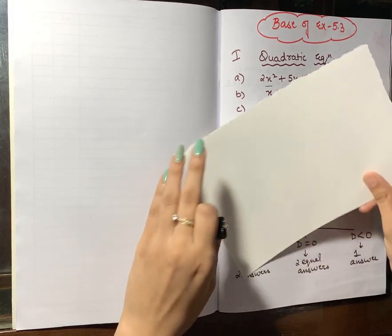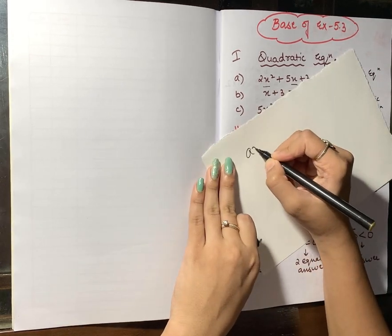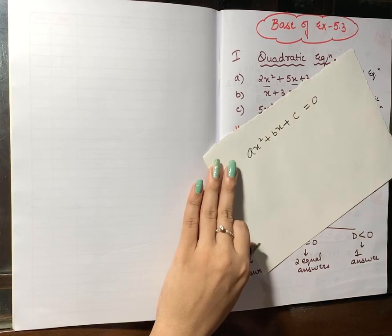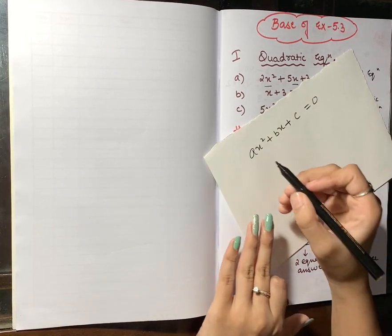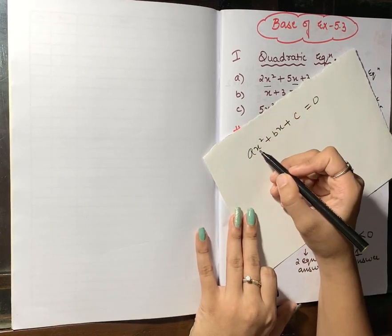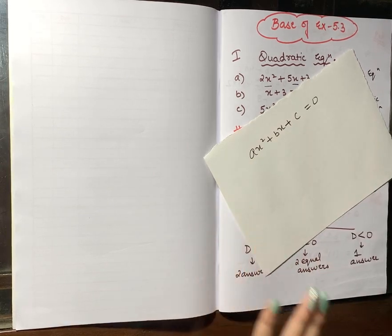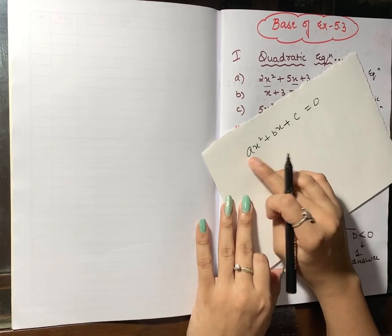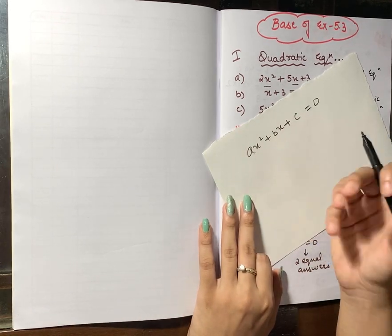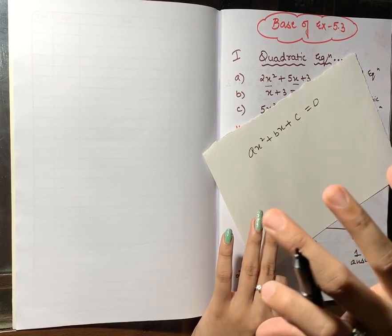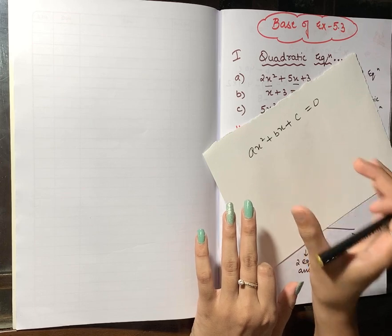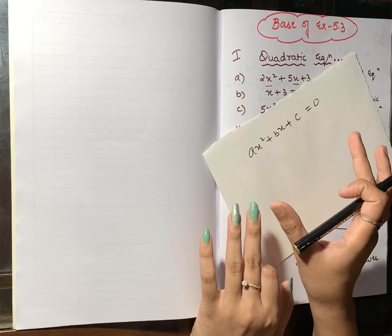I want you all to analyze this general form a little. In ax² + bx + c = 0, the maximum power of the variable x is 2. We use a, b, c because it is a general form — you can put any value in place of a, any value in place of b. That is why it is called the general form.